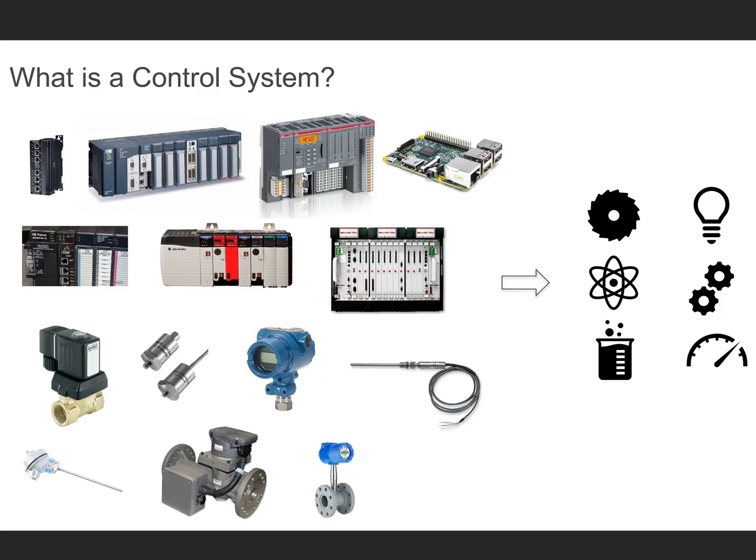So what is a control system? A control system is a combination of electrical and mechanical devices that are used together to follow a process, produce a widget, or monitor a sequence.